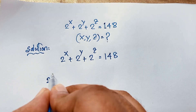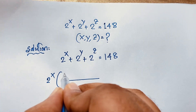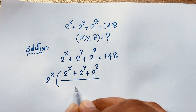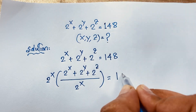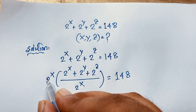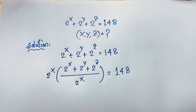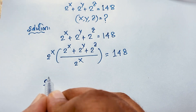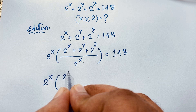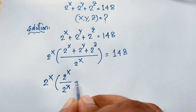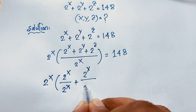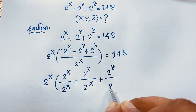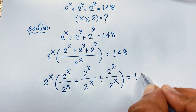I multiply below by 2 to the power x, then divide again by 2 to the power x. So we get 2 to the power y plus 2 to the power z over 2 to the power x is equal to 148. If I separate this fraction, it will be 2 to the power x over 2 to the power x, plus 2 to the power y over 2 to the power x, plus 2 to the power z over 2 to the power x, is equal to 148.